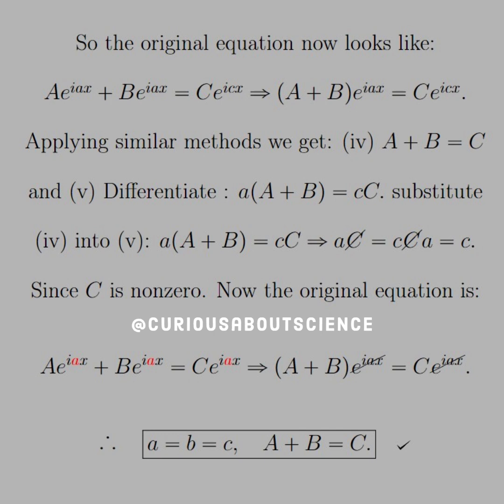Substitute in four, we see that we get, yeah, substitute four into five, we get little a times big A plus big B is equal to c, little c big C. On the left-hand side, we substitute in equation four, so we get aC is equal to little c big C. And you see that c is canceled, so we show that a is equal to c. Since C is non-zero...